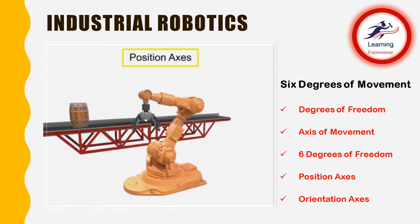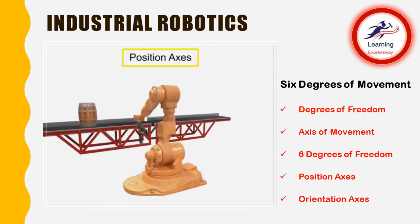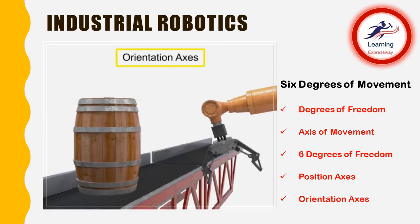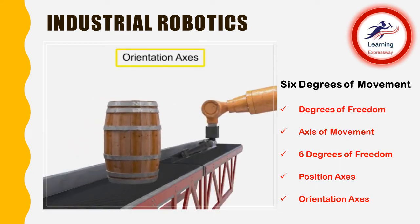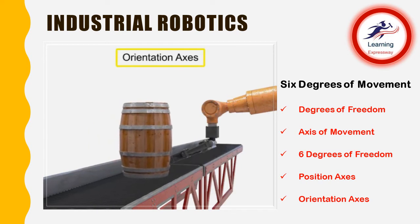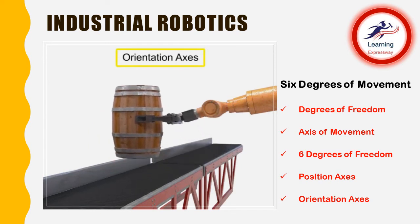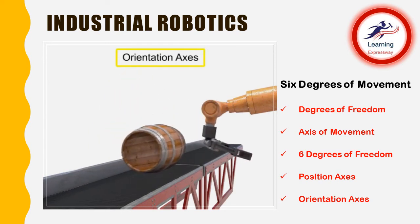The position axes movement at the waist, shoulder, and elbow, along with the orientation axes movement of pitch, roll, and yaw, allow the robot to accomplish its tasks within the work envelope.